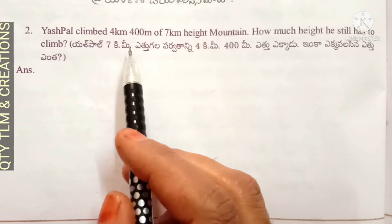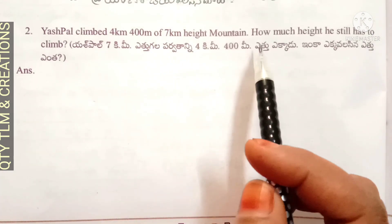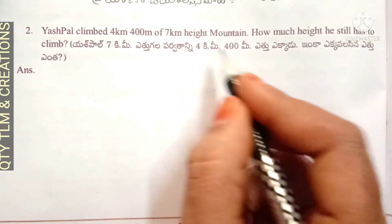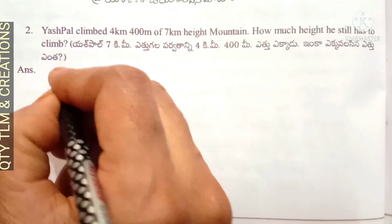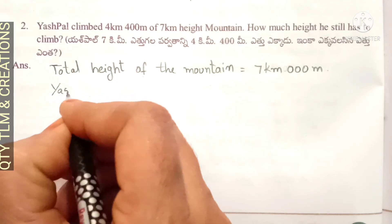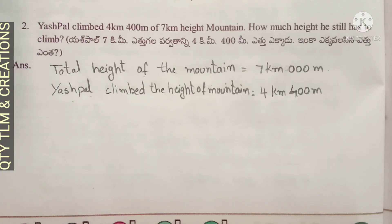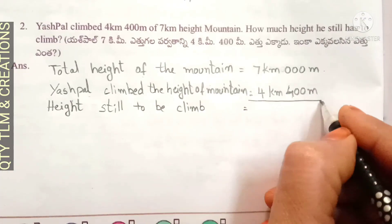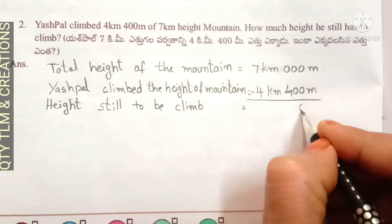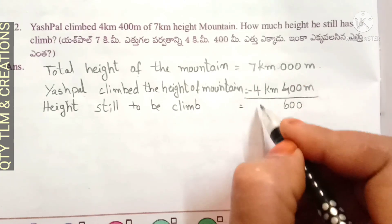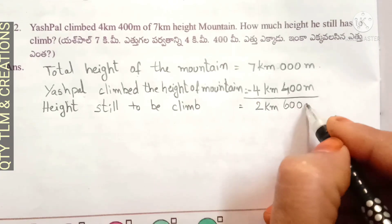Next question: Yeshpal climbed four kilometers four hundred meters of a seven kilometer height mountain. How much height does he still have to climb? Total height of the mountain is equal to seven kilometers. Yeshpal climbed the height of mountain is equal to four kilometers and four hundred meters. Height still to be climbed — subtracting: borrowing to get 6, and 6 minus 4 is equal to 2. So two kilometers six hundred meters.